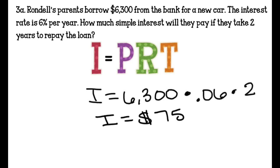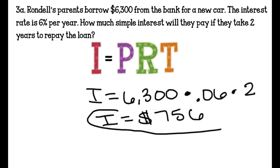We read the question and make sure we only need to give them the interest. It says, how much simple interest will they pay if they take two years to repay the loan? So it'll be $756 that they will pay.